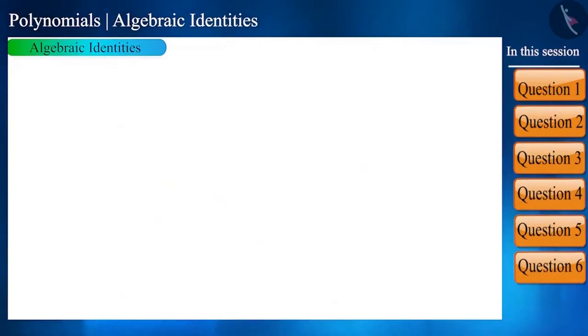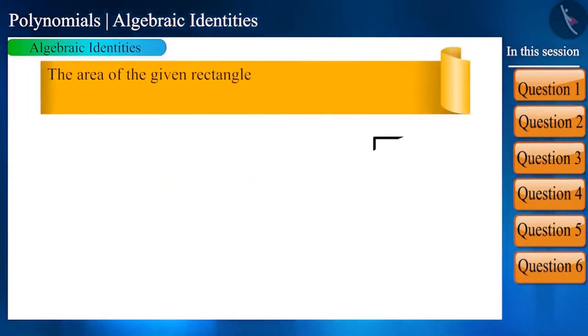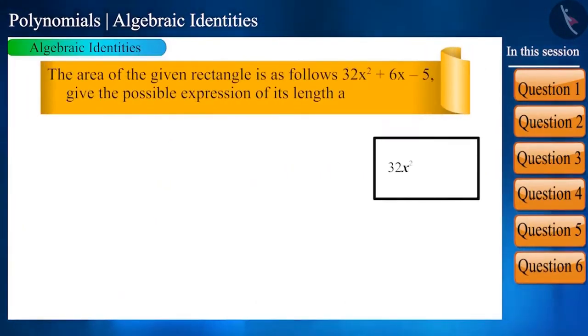And now, let's take the last question of this session. The area of the given rectangle is as follows: 32x square plus 6x minus 5. Give the possible expression of its length and breadth.